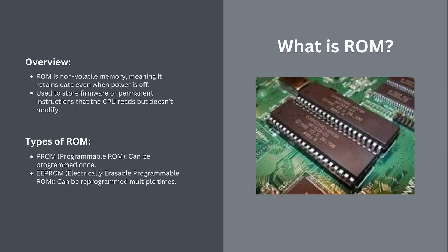Next up is ROM — Read Only Memory. Unlike RAM, ROM is non-volatile, meaning it keeps its data safe even when the power is off. It's like having a note that never loses its content. ROM is the go-to for storing essential information — think of it like the rulebook that the CPU follows. There are two types: Number one, Programmable ROM (PROM) — once you write it, it's permanent. Number two, Electrically Erasable ROM (EEPROM) — like an Etch-a-Sketch, you can erase it and write something new. Now let's jump into Logisim and design our own ROM.